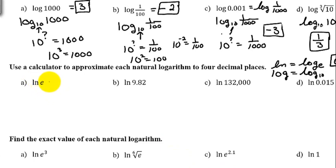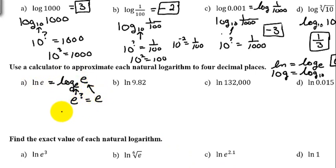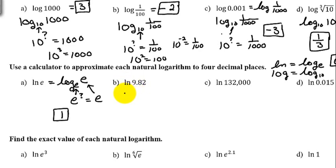Our first example is the natural log of e, which is the same as log base e of e. What power can I raise e to so that I get e? The answer is 1, so ln(e) = 1. For the next example, ln(9.82), push the ln button on your calculator and type in 9.82. You should get 2.28442 and more digits. The number after the last digit shown is smaller than 5, so we leave it and get 2.2844.